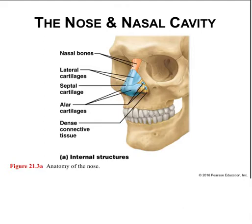Inhaled air enters the nasal cavity—a hollow space formed by bone and hyaline cartilage that extends anteriorly from the nostrils to the two posterior nares, which are the openings that the nasal cavity uses to connect to the nasopharynx, the part of the throat that lies behind the nose. The nasal cavity is split into left and right portions by the nasal septum, made of bone and hyaline cartilage. The vestibule is the most anterior region, just inside the nostril, where bristle-like hairs prevent large objects from entering.